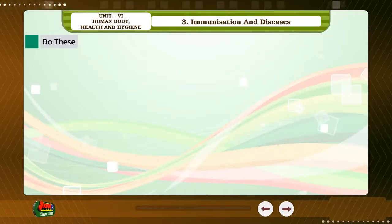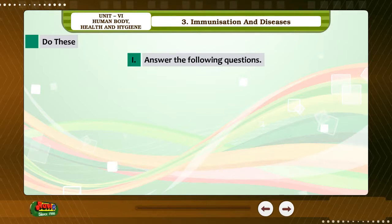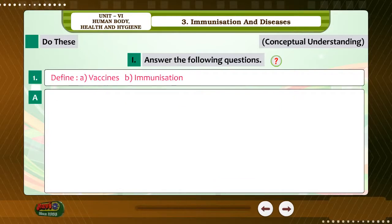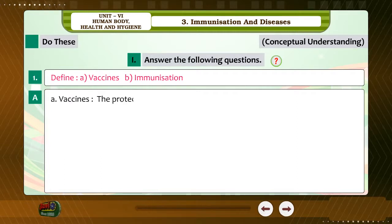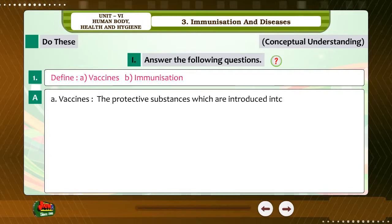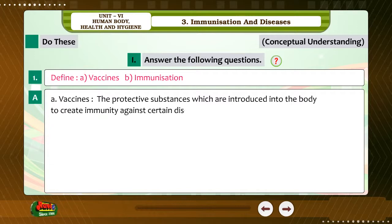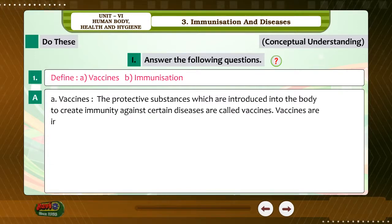Conceptual understanding. Question 1: Define (a) vaccines and (b) immunization. Answer: Vaccines are the protective substances which are introduced into the body to create immunity against certain diseases.